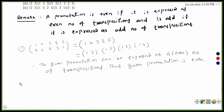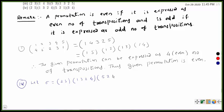Let sigma be the permutation: sigma = (2 5)(1 3 2 4)(1 5 2 1)(3 4). So first we express sigma in standard form.